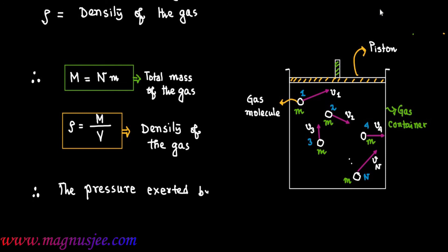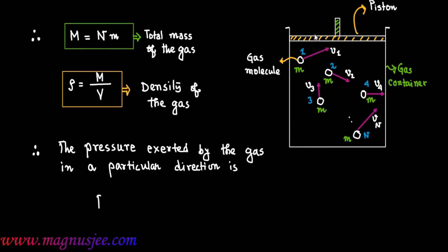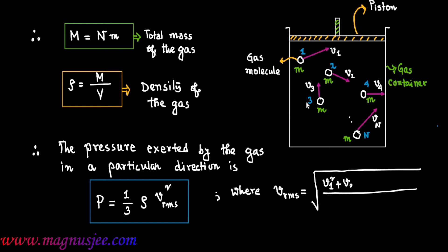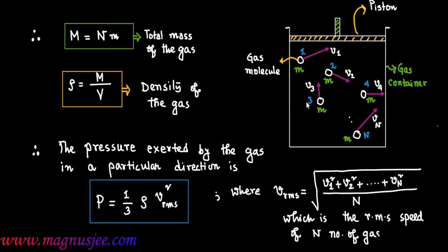The expression of pressure exerted by the gas in a particular direction is given by P equals one-third rho V_rms squared, where rho is the density and V_rms is the root mean square speed: V_rms equals the square root of (V1² + V2² + ... + Vn²) divided by n. This is the rms speed or rms velocity of n number of gas molecules.